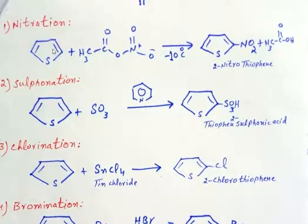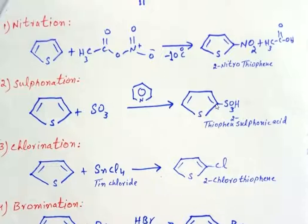The first electrophilic substitution reaction is nitration. In the nitration reaction, acetyl nitrate is treated with thiophene at very low temperature, producing 2-nitrothiophene. In the sulfonation reaction, a sulfonic group is introduced at position 2 of thiophene by treating sulfur trioxide with thiophene in the presence of pyridine, which acts as a catalyst. The product is thiophene-2-sulfonic acid.